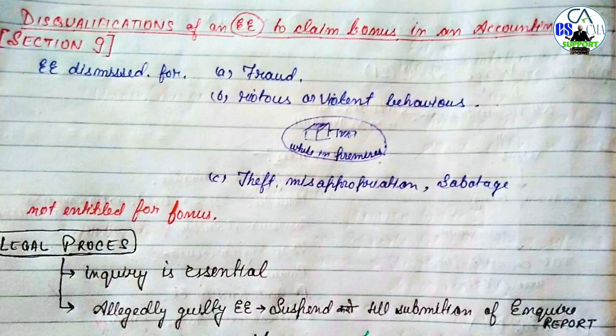Section 9 के अनुसार जब किसी employee को dismiss किया जाता है service से, तो वो employee bonus receive करने से disqualify हो जाता है। यह disqualification तब होती है जब उसे service से disqualify किया गया हो। Number one: fraud के लिए disqualify किया गया।